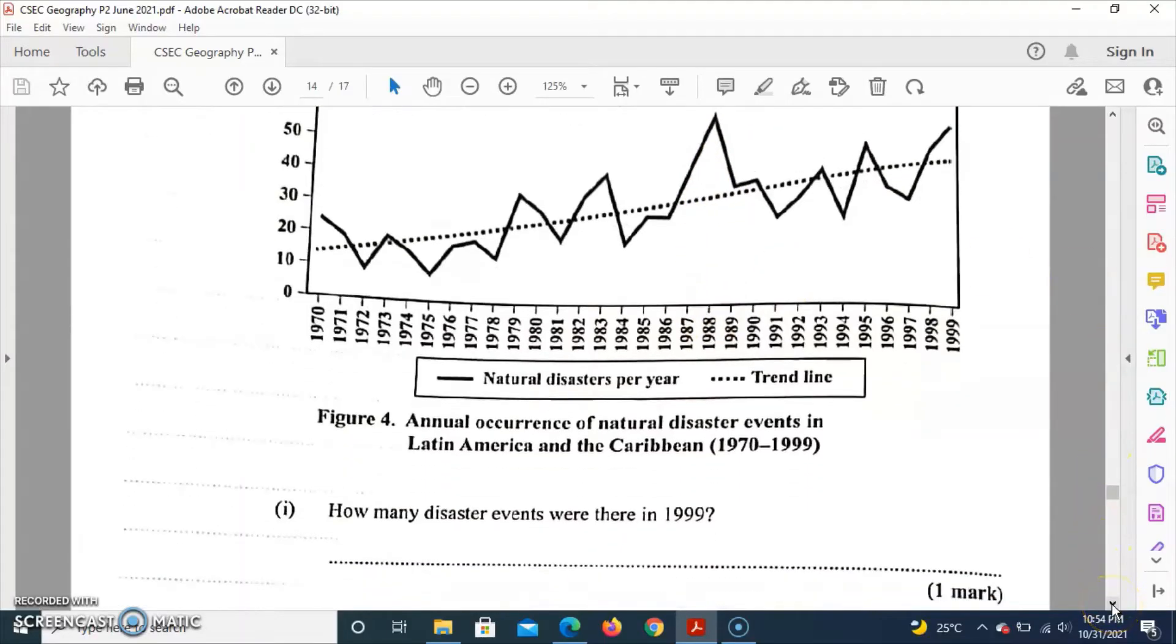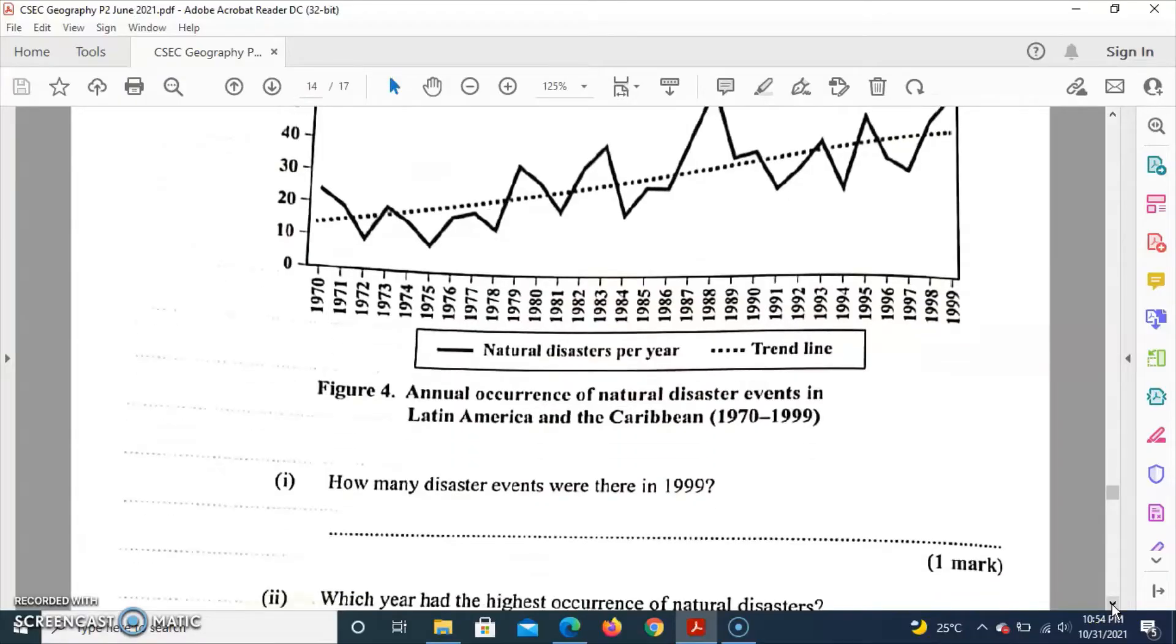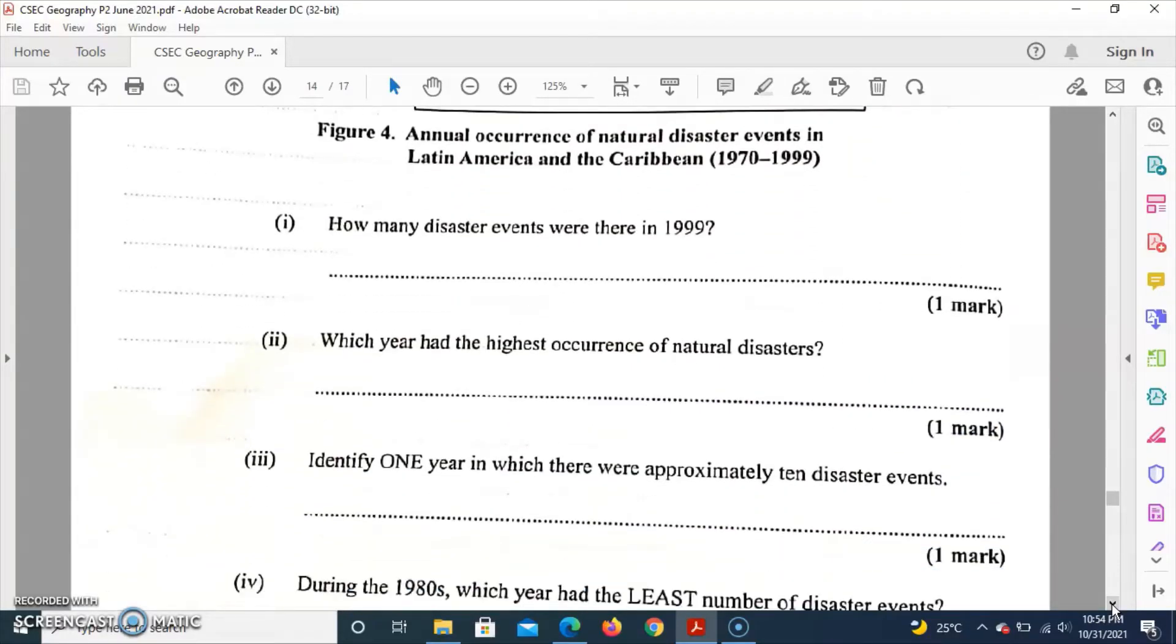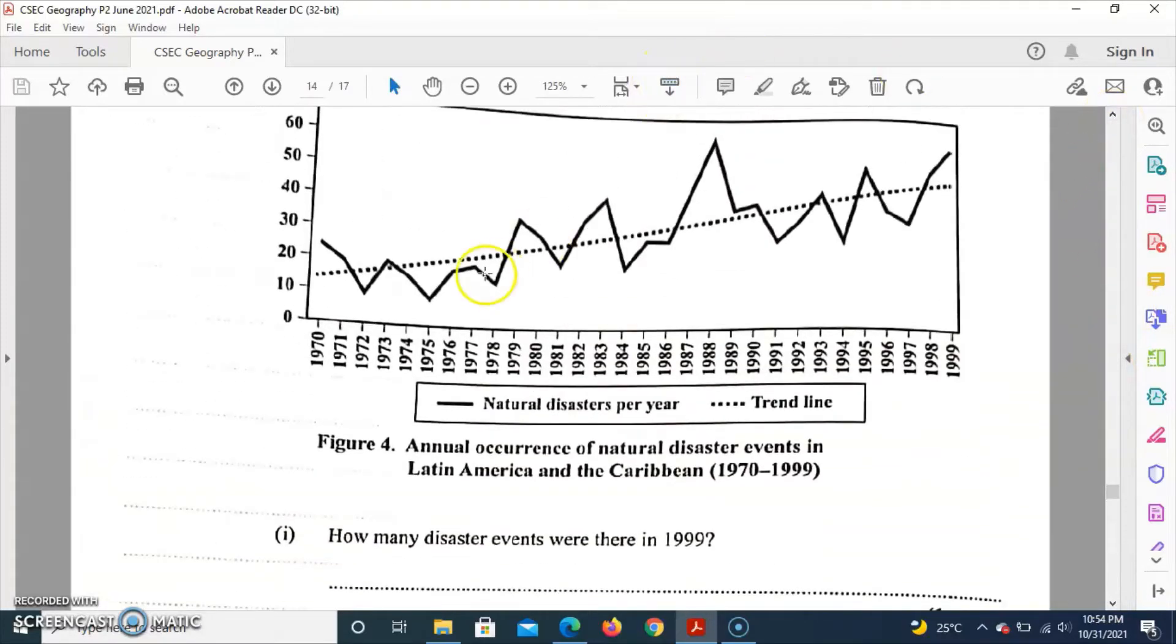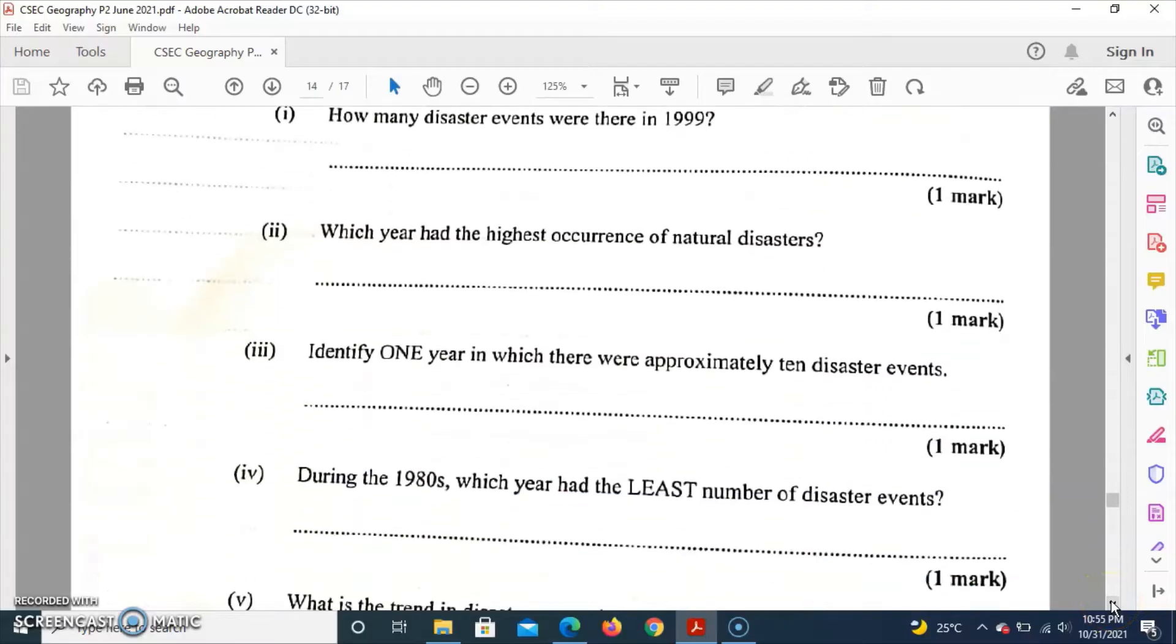Now to identify one year in which there were approximately 10 disaster events. So 10 disaster events, this is 10, and when you go across you would realize that 1972 and 1975 both years had 10 natural disaster events. So whichever one you wrote, then your answer would still be correct: 1972 and 1975.